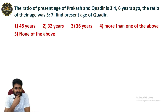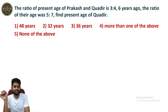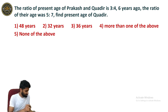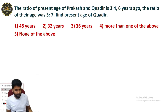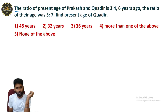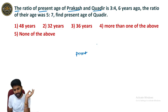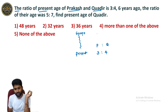Next question. The ratio of the present ages of Prakash and Khadir is 3 to 4. Six years ago, the ratio of their ages was 5 to 7. Find the present age of Khadir. So the present ages of Prakash and Khadir are in the ratio 3 to 4. Six years ago the ratio was 5 to 7.